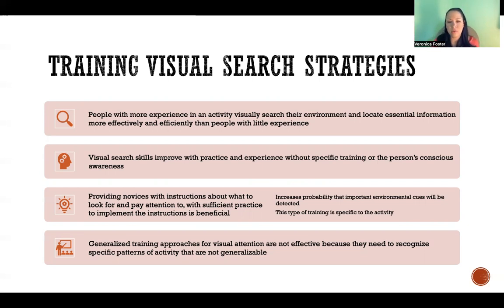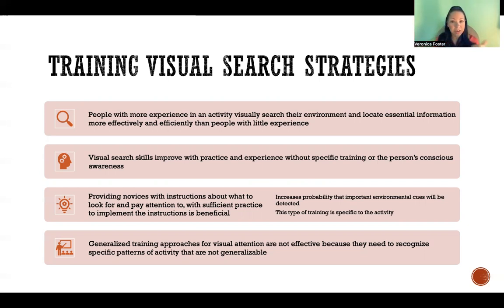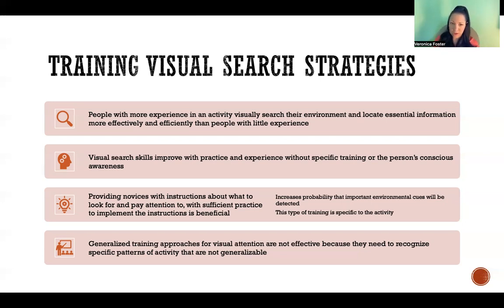An example of this: when I was learning to drive, a piece of advice that stuck with me was that when driving past parked cars, pay attention to whether their front tire is turned toward the road — it could indicate someone in that car is getting ready to pull out. So when you see tires on parked cars aimed toward the road, be ready that somebody might try to pull out in front of you. That's an example of a visual search strategy where, as a novice, I was given instructions about a specific cue in the environment to look for that could indicate a certain event. That really stuck with me and made me better at visually searching and being prepared while driving. Thank you so much for watching — I'll see you in the next video.